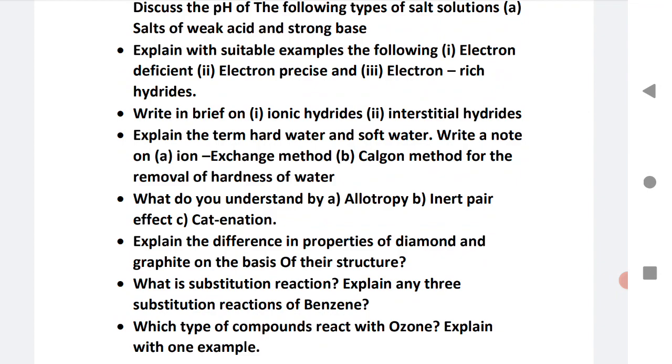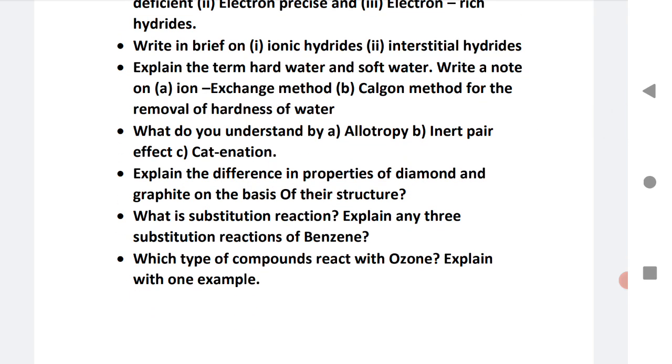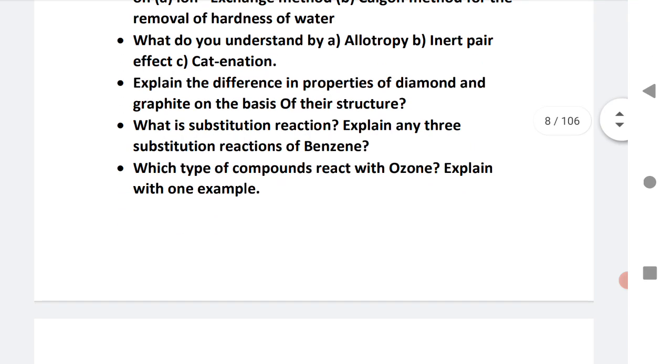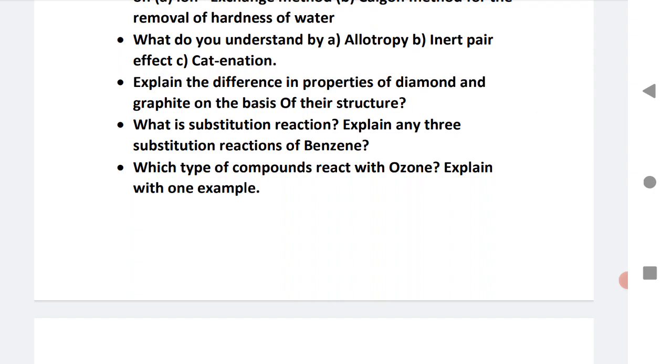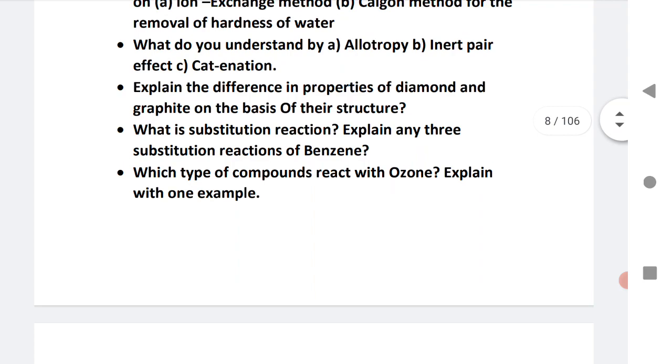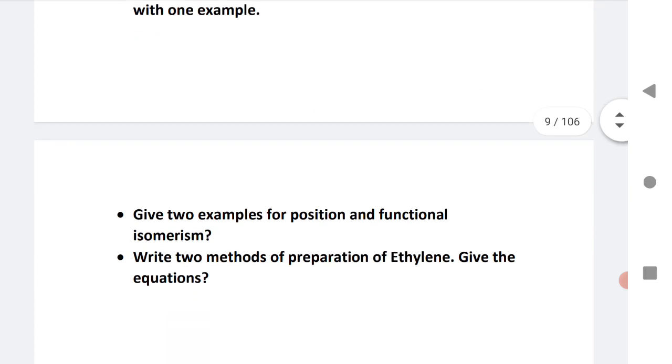Very important question, mostly asked for using Calgon method, sometimes ion exchange method. Read both methods. What do you understand by allotropy, inert pair effect, and catenation? Explain the difference in properties of graphite and diamond. Substitution reaction from organic chemistry. Which type of compounds react with ozone? Explain with an example.